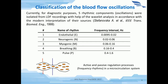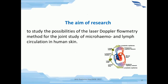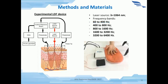The classifications of blood flow oscillations are represented on this slide. There are five types of oscillations distinguished as active or passive rhythms: endothelial, neurogenic, myogenic, breathing, and pulse. The aim of this research is to study the possibilities of the laser Doppler flowmetry method for the joint study of micro-hema and lymph circulation in human skin. The use of standard functional tests, for example breath holding or occlusion, results in microvascular changes. This leads to a redistribution of the AC signal spectral power in different spectral ranges of the Doppler frequency shift, allowing for non-invasive evaluation of the scattering particle velocity distribution in the diagnostic volume.